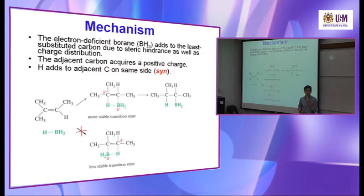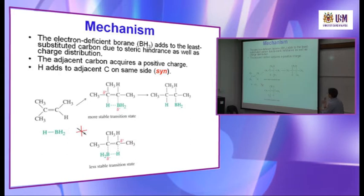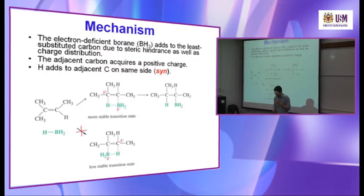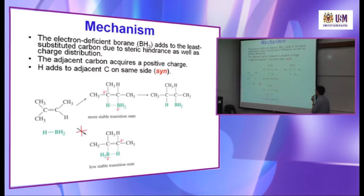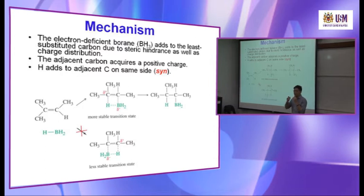So in your exam you must be able to show these two transition states and state that this is the more stable transition state. Therefore it yields an anti-Markovnikov product. Because the boron is attached to the less substituted side, the adjacent carbon acquires a positive charge. And H adds to the adjacent carbon on the same side — because they add together in a concerted step, it happens at the same time. So because of steric factors it adds on the same side, yielding a syn anti-Markovnikov product.